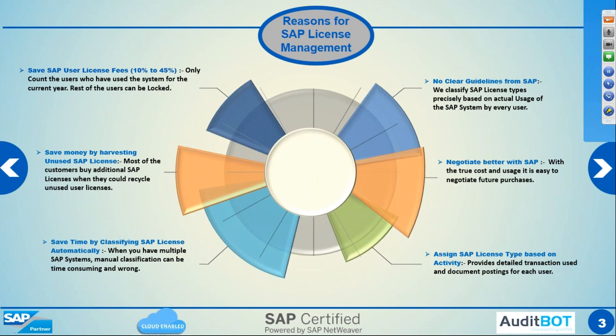It's also a very good negotiation point for you to understand the usage. So when the contract with SAP is getting over, or you are trying to buy additional licenses for additional tools like HANA, GRC, or any other software, SAP is very open to listening to your concerns on the license count. So you are in a better position to negotiate with SAP. And finally, you also assign license types based on activity — not based on guesswork. Assign based on activity.